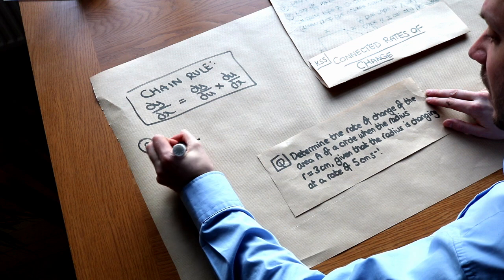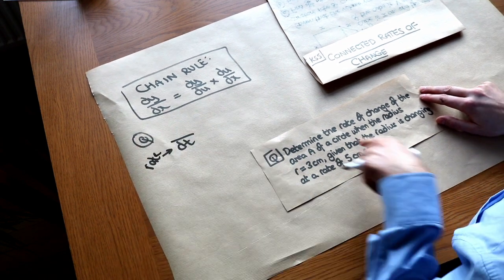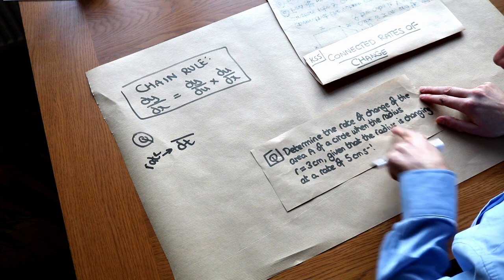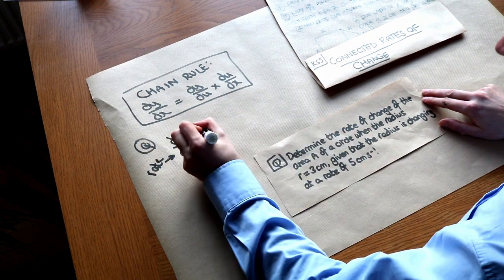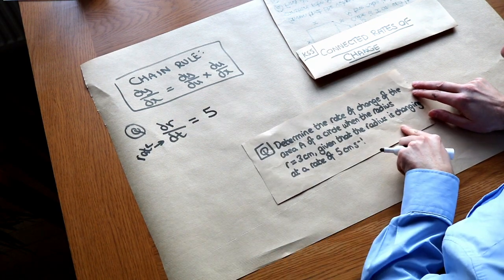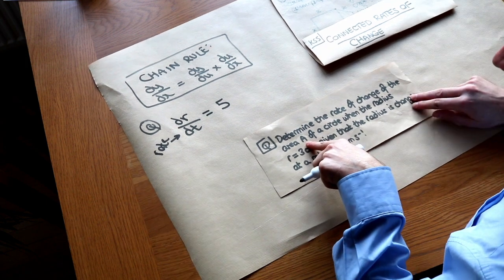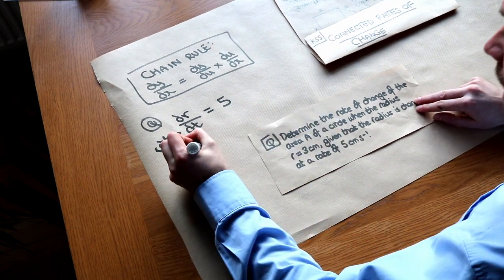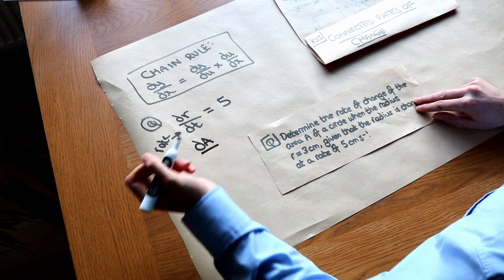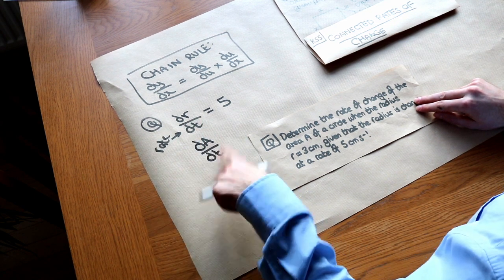So that's always a rate when you have over dt. It's the rate of change of the radius, so it's dr over dt, and we're told that is equal to 5. We want to determine the rate of change of the area A. So the rate of change of the area is dA over, well it's a rate, so it'll be over dt. The rate of change of area with respect to time.